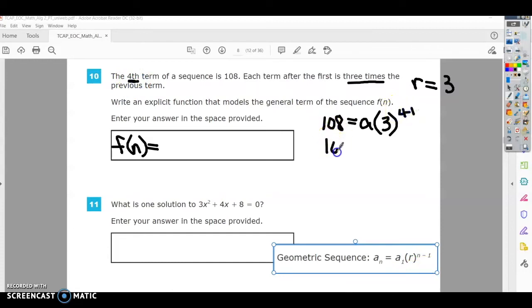It's going to be 108. We're trying to find our first term right now. And then it's going to be 3, 4 minus 1 is to the third power. So we're going to have 108 equals 3 cubed is 27. And then I'm going to divide both sides by 27. So a is going to equal 4.